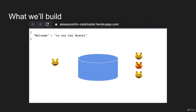Why a cat hostel, you ask? Because as long as you know how to implement basic operations like creating an entity, removing it and listing the entities you have, you can build this kind of service for anything — supermarket orders, auction items, taxes, you name it. So why not cats?